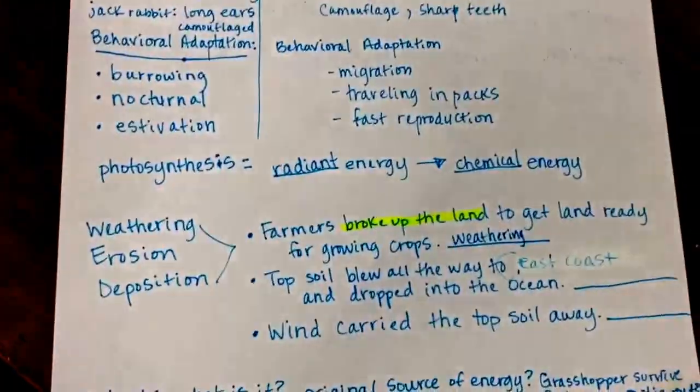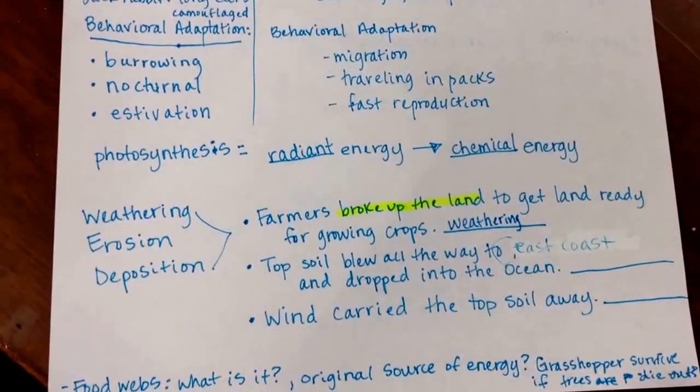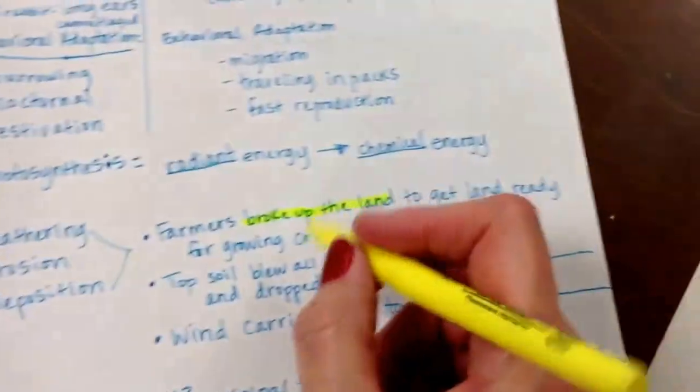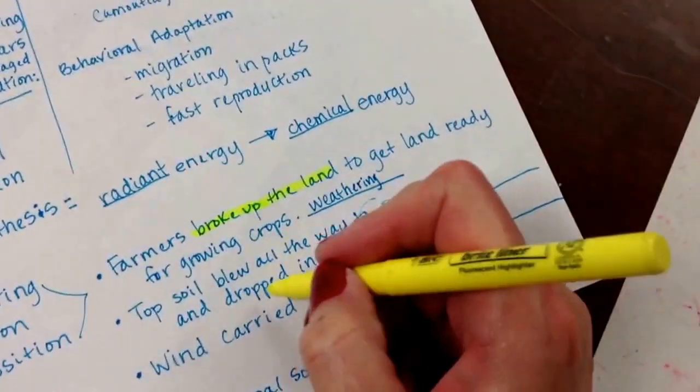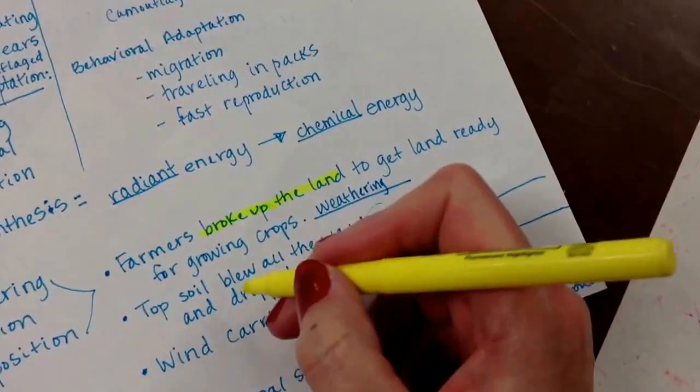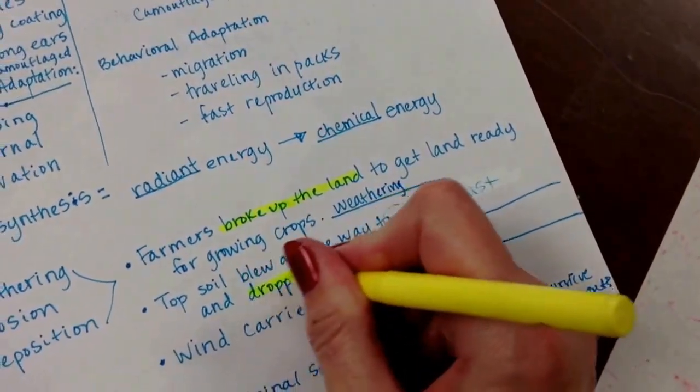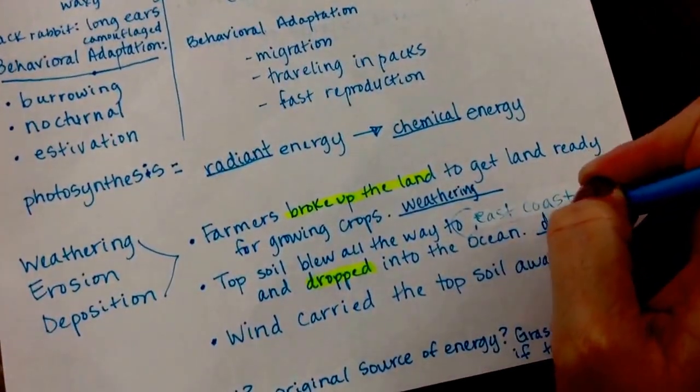Next. The soil blew all the way to the east coast and dropped into the ocean. The key words we're looking for is it blew, or blew all the way to the east coast, but here it is right here. It says dropped. That's what we need to see. What was the end result? It dropped, so that would be our deposition.